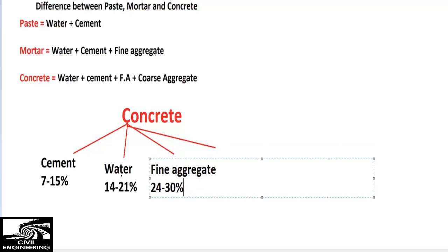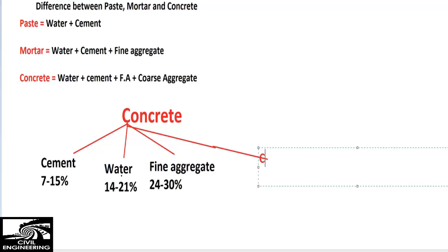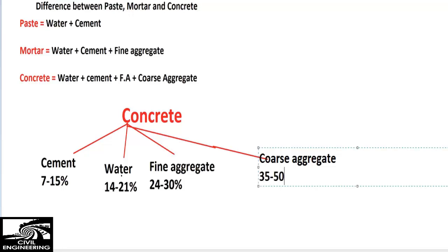The fourth component is coarse aggregate. Its percentage range is from 35 to 50 percent. Coarse aggregate is the most used component by volume in concrete.